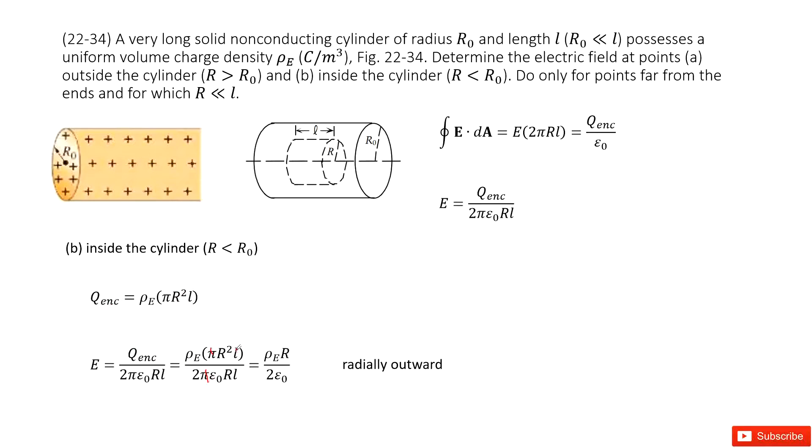L, L cancelled. And one R can cancel one R. So now we get the final answer look like this one, still radially outward. Thank you.